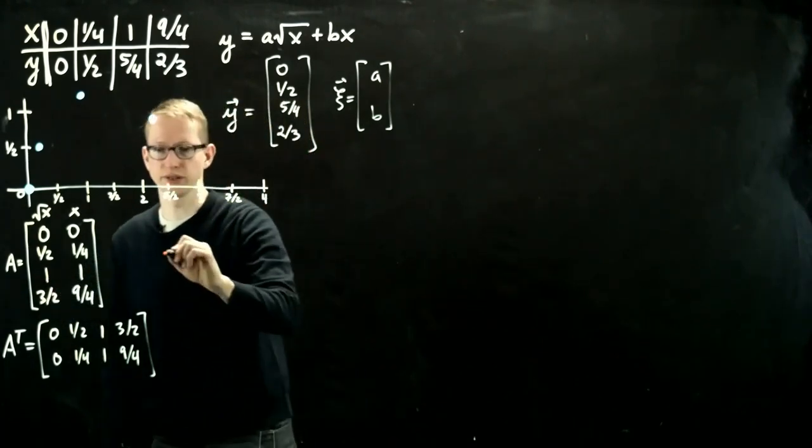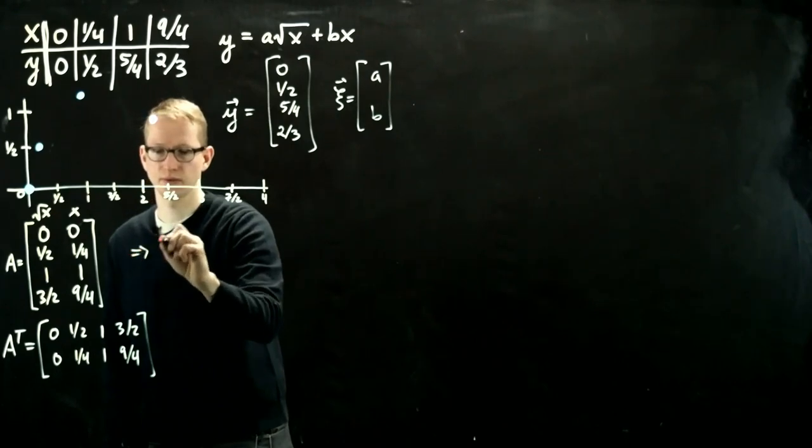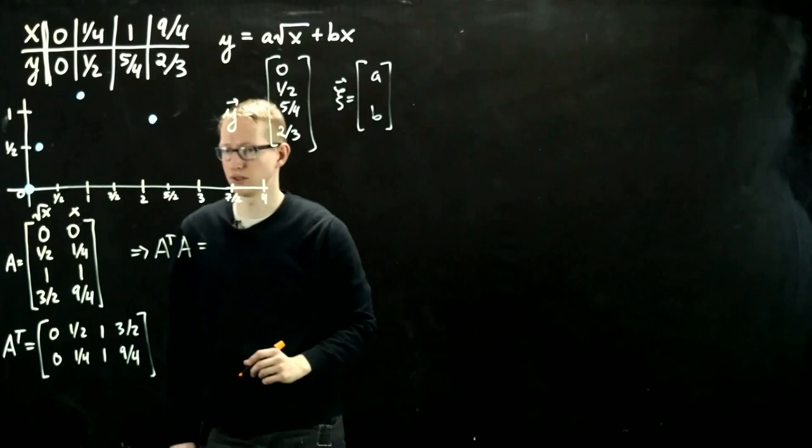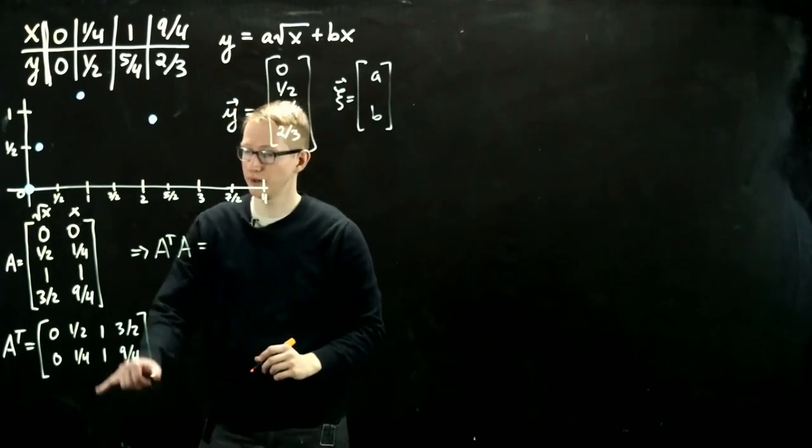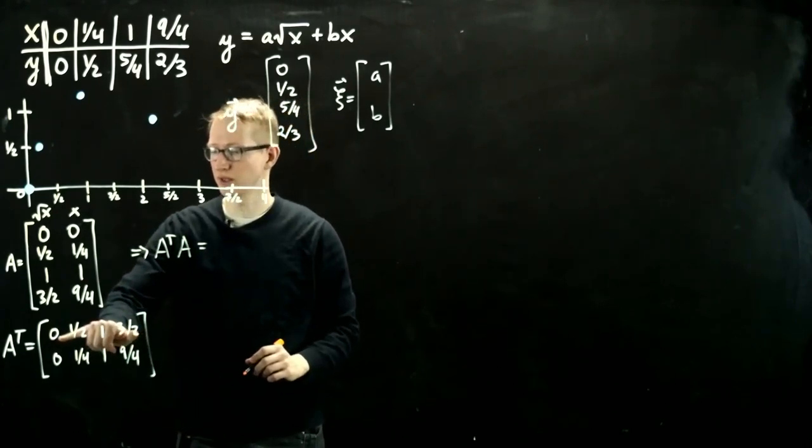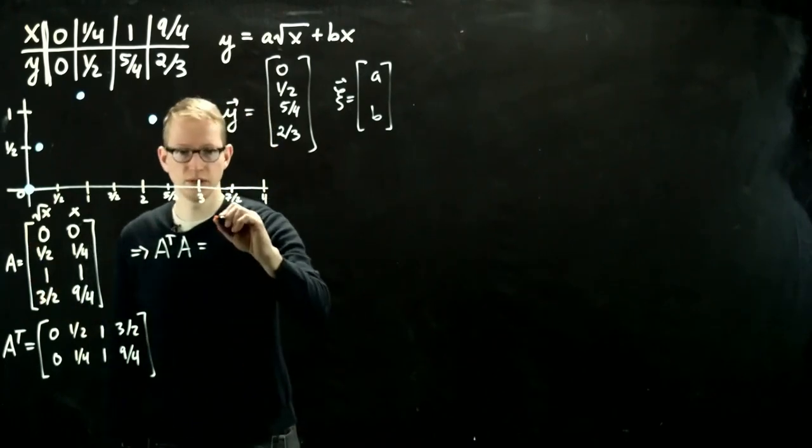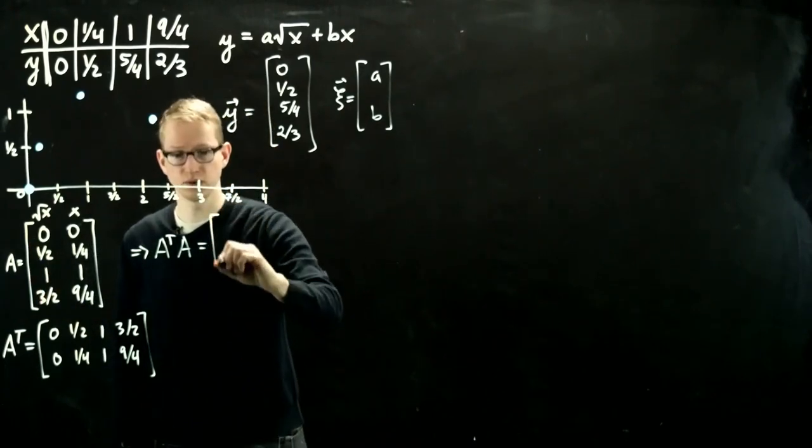So let's compute A transpose A. Hopefully the arithmetic isn't too bad, so I'll try to be as careful as possible so that I don't make any careless errors. So this is going to be, first of all, a 2 by 2 matrix.